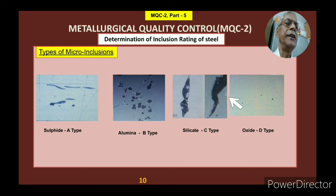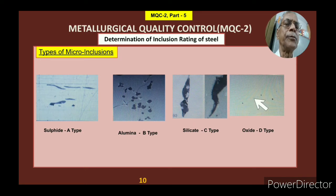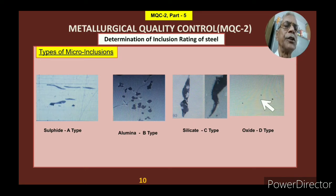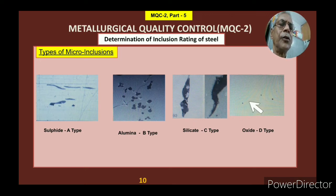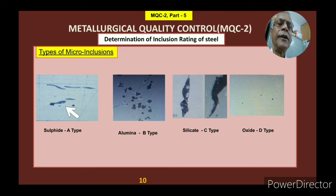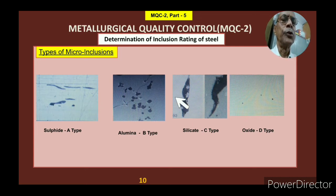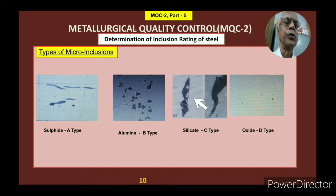Oxide inclusions are easy to identify because they are generally round or globular in shape. It is easy to identify oxide and alumina, but sometimes it is difficult to differentiate silicate and sulphide. The methods described above help you differentiate between these two inclusion types.